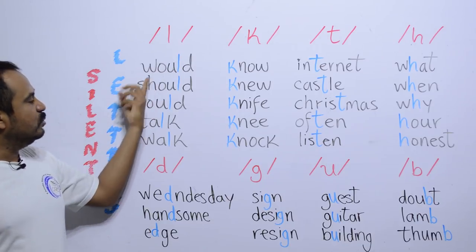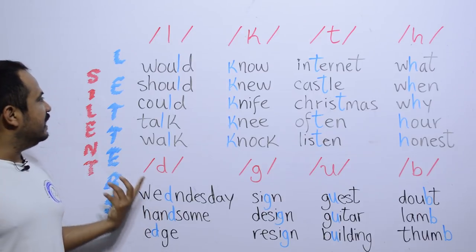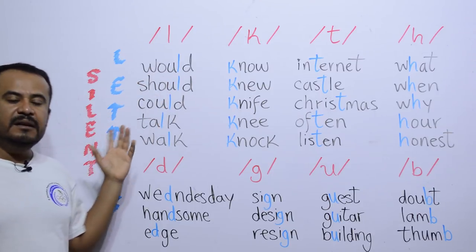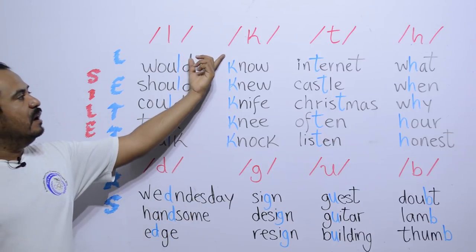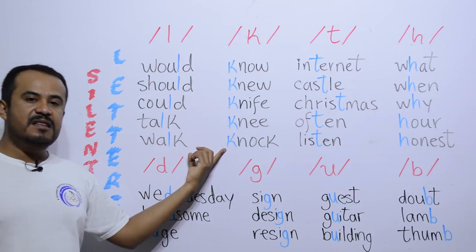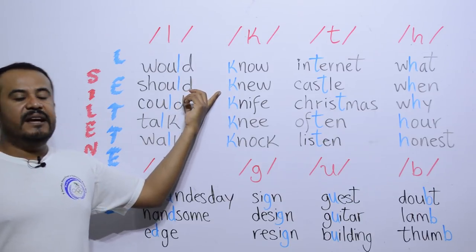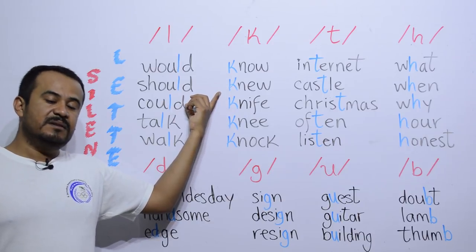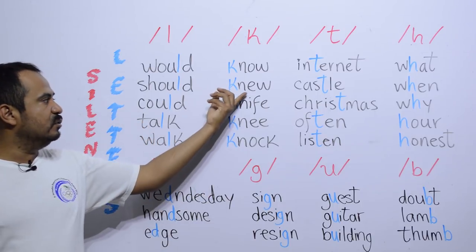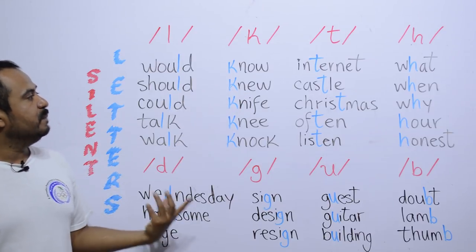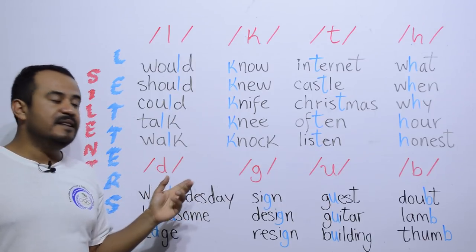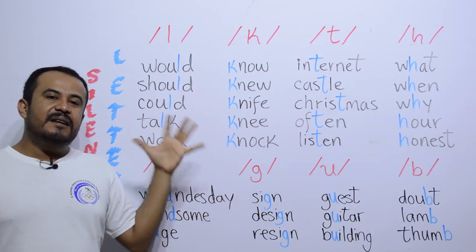Here we have: would, should, could, talk, and walk. Si te fijas, aquí no se pronuncia la L — alguna vez vi que alguien dijo 'would' pero no es así. Todos estos modales — would, should, could — tienen la letra L silenciosa. Después tenemos la letra K silenciosa: new, knife, knee, and knock. En el inglés británico es 'new' y en el inglés americano es 'new' — más bajita. Después tenemos con la letra T: internet, castle, Christmas, often, and listen.